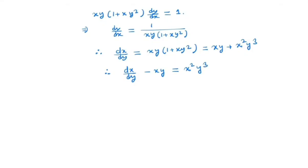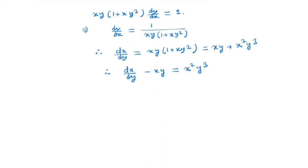Notice that this is a Bernoulli's equation because here we have x and here we have x squared. I have already made a video on how to solve Bernoulli's equation — you can check that video, I will give the link in the description box. In Bernoulli's equation, what we do is divide both sides by x squared. So then we get x to the minus 2 times dx/dy minus x inverse times y equals y cubed.